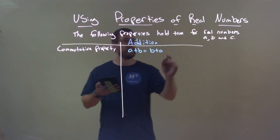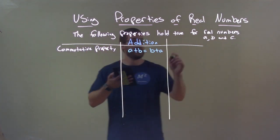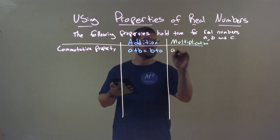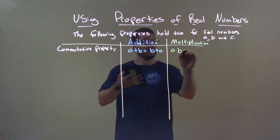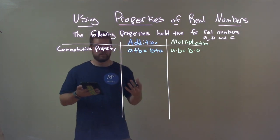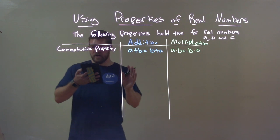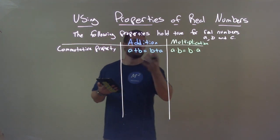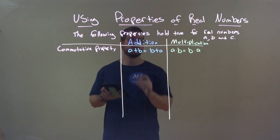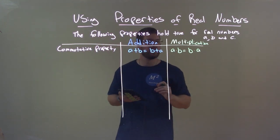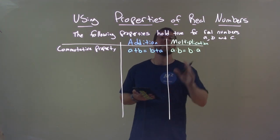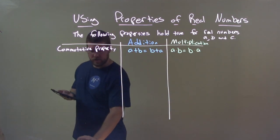We continue that with multiplication. The same idea holds: A times B equals B times A. So that's our commutative property — it doesn't matter the order for addition or multiplication. The commutative property of addition: A plus B equals B plus A. The commutative property of multiplication: A times B equals B times A.